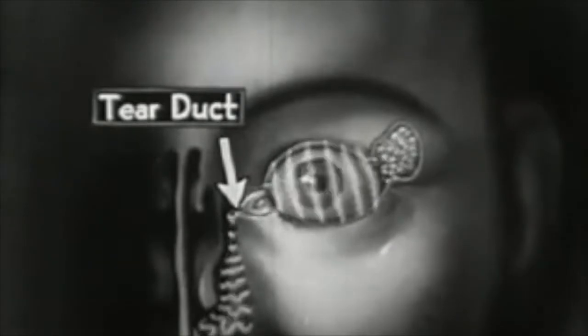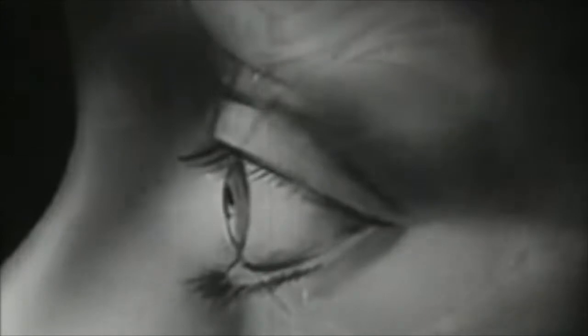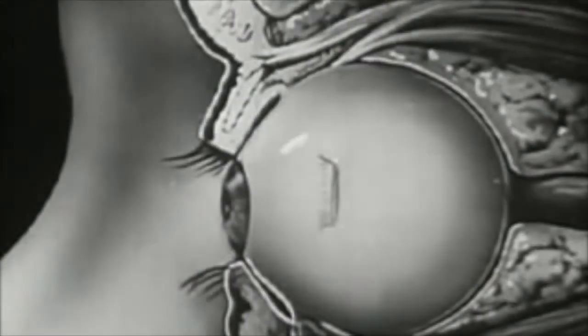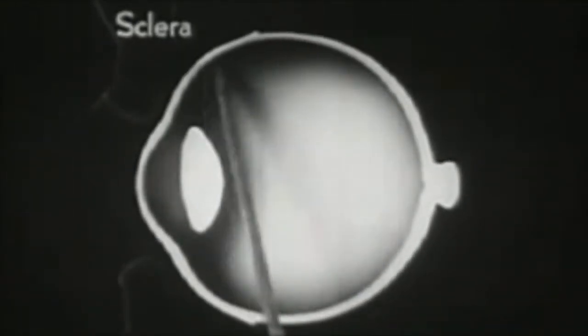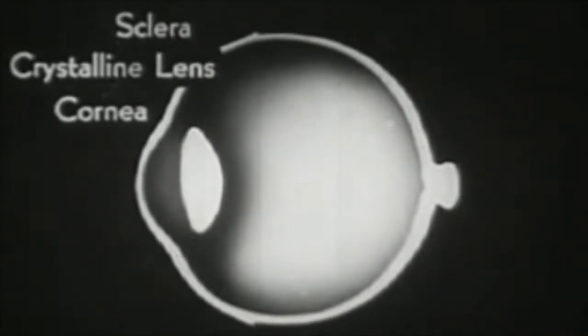The eyeball itself has a white glistening surface. Its front part bulges and forms a highly transparent window. In this sectional view, the capsule of the eyeball is seen to have three layers. This thick, tough outer layer is called the sclera and serves to protect the delicate structures within. This transparent bulging portion is called the cornea. Notice also the crystalline lens, which is one of the main features of the eye mechanism.